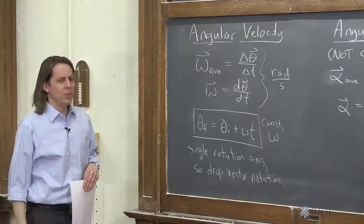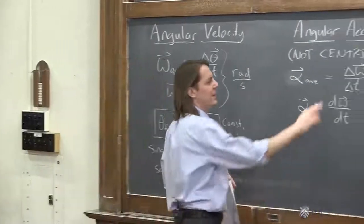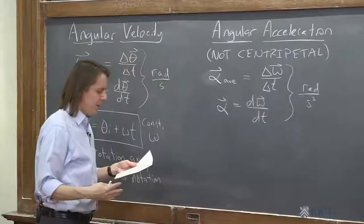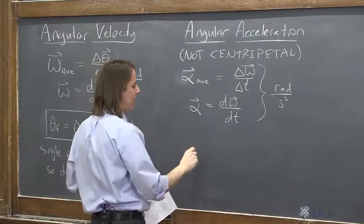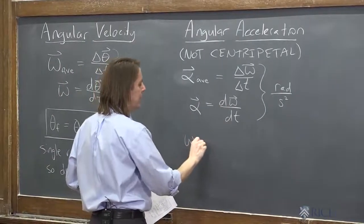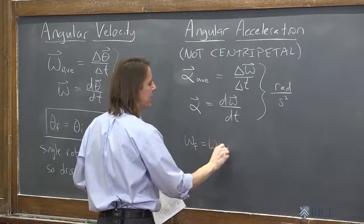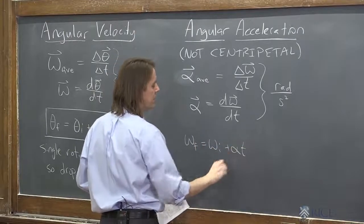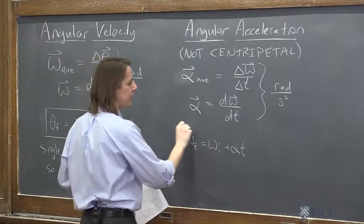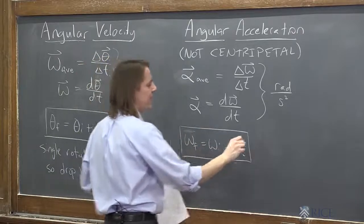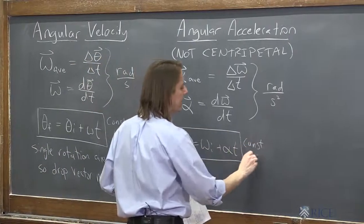And what else can we do? We like to take this one, final minus initial, and write an equation assuming constant alpha, constant angular acceleration, where we say omega final equals omega initial plus alpha t. All right, now we're going to leave out the vectors again because we're in 1D. So we have that equation for constant alpha.